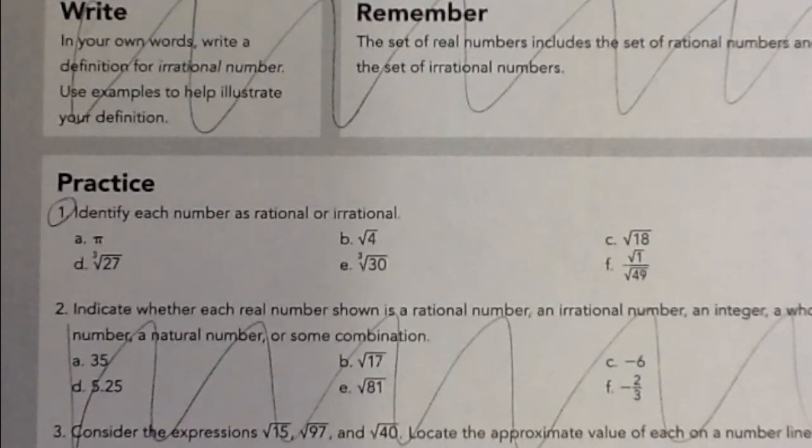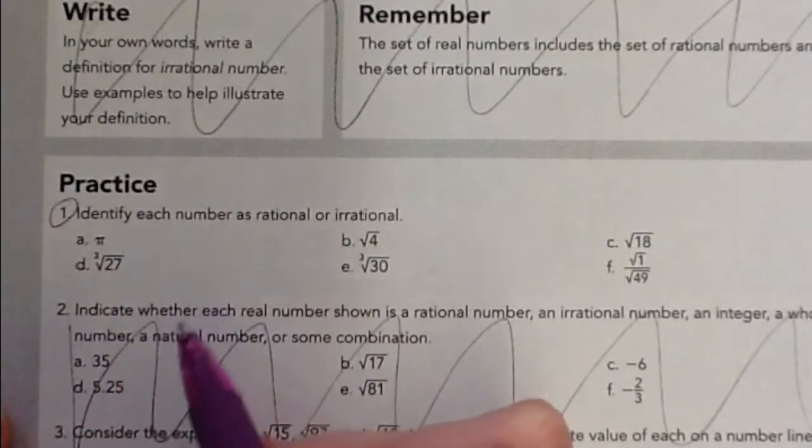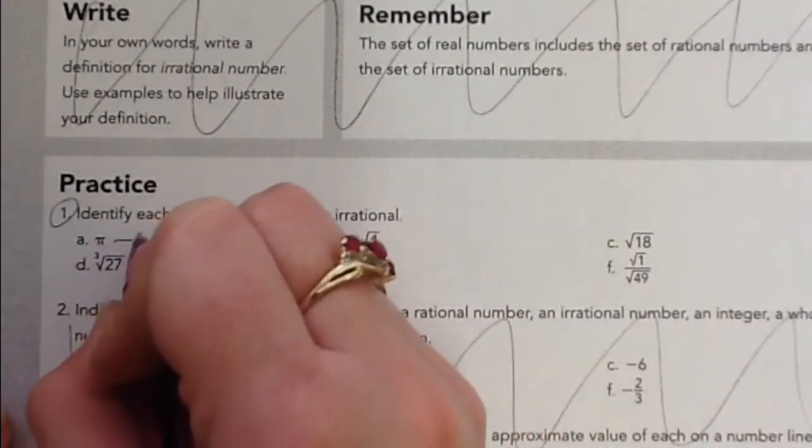Also, rational numbers come from any square roots, or sorry, any roots that are not perfect squares. So pi, all of us know that that is a number that keeps going on and on without any sort of pattern. So that's definitely irrational.